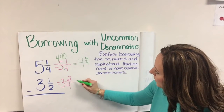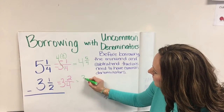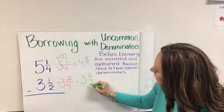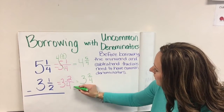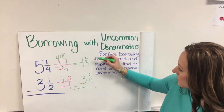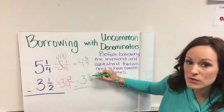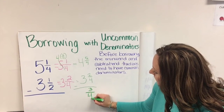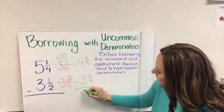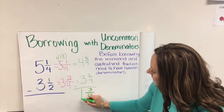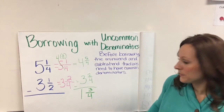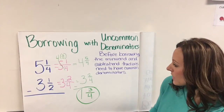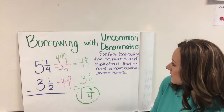I'm going to bring over my 3 and 2 fourths, and I can now go ahead and subtract. I have 5 fourths minus 2 fourths, and that equals 3 fourths. And I have 4 minus 3, and that equals 1. I'm going to go ahead and circle my answer, because I did a lot of work here, and I want to make sure it's clear that that's my answer.